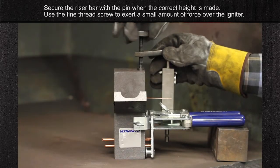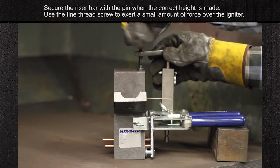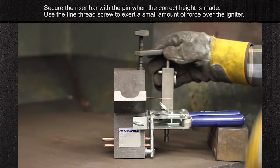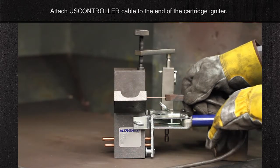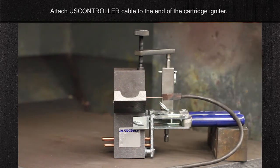Use the fine thread screw to exert a small amount of force over the igniter. Attach U.S. controller cable to the end of the cartridge igniter.